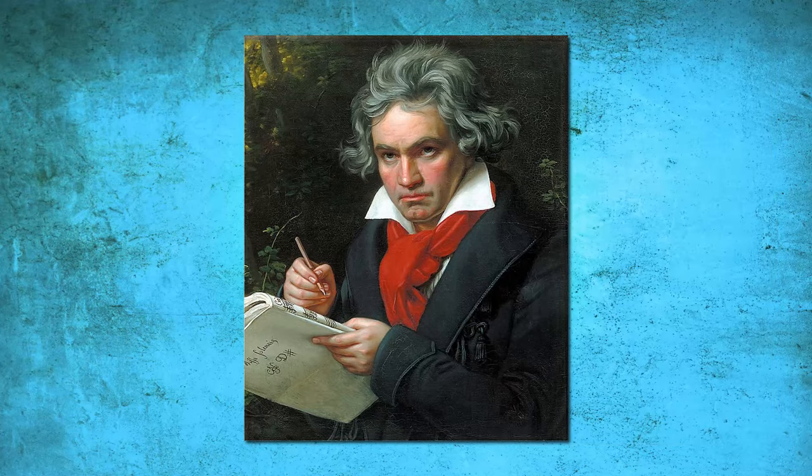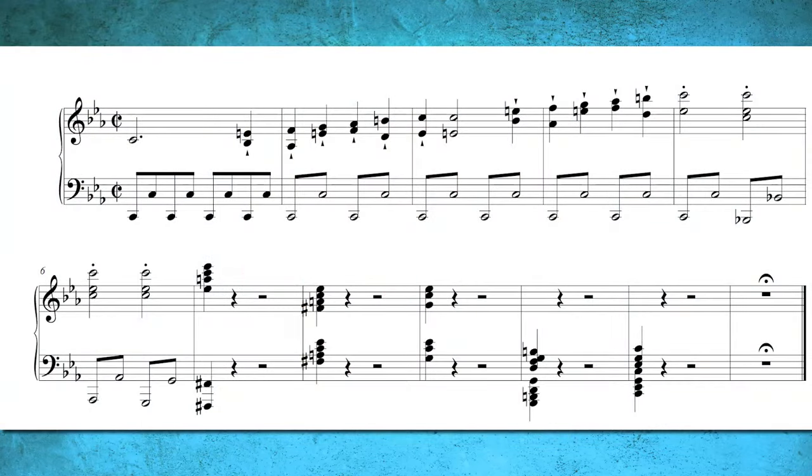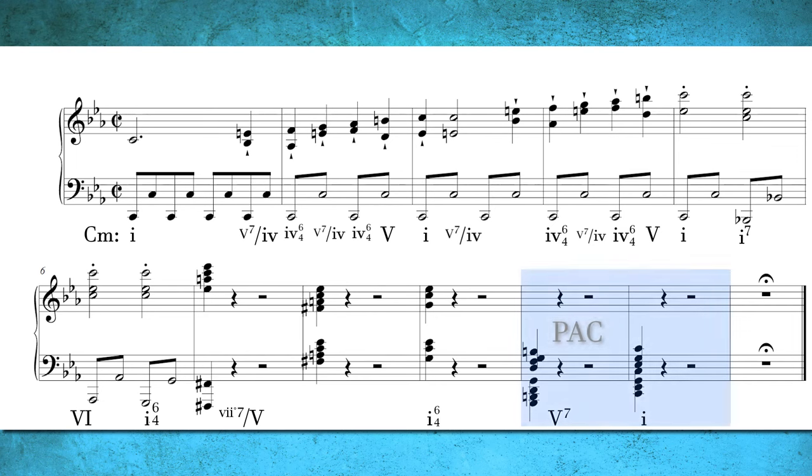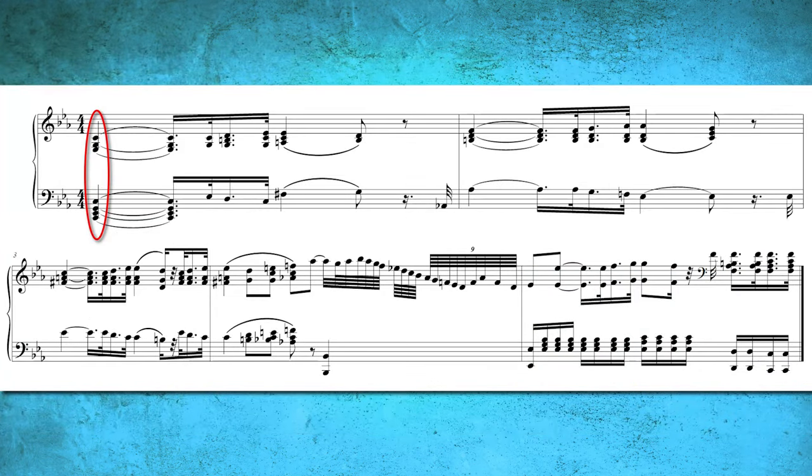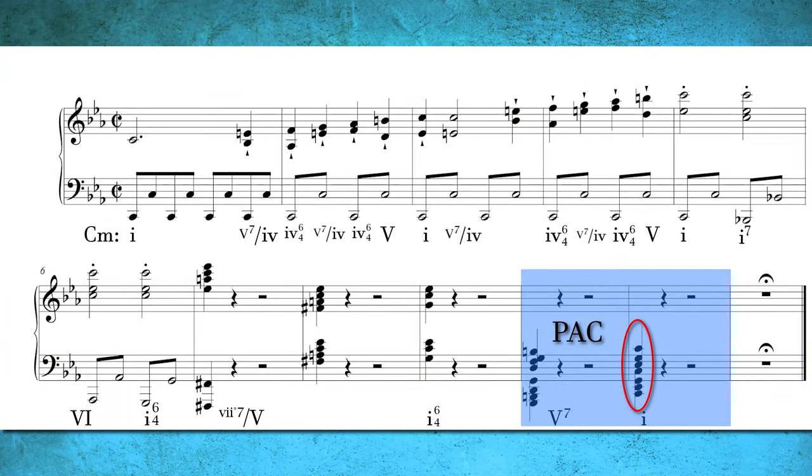The final example illustrating the perfect authentic cadence is the ending of the first movement of Beethoven's Pathétique Sonata. This serves to demonstrate how a perfect authentic cadence sounds in a minor key, a characteristic feature often found in Beethoven's compositions for providing a solid resolution at the conclusion of a piece. Beethoven sets up a G dominant 7 chord which then resolves to the tonic minor 1 chord. Both the top and bottom notes of this chord are C.